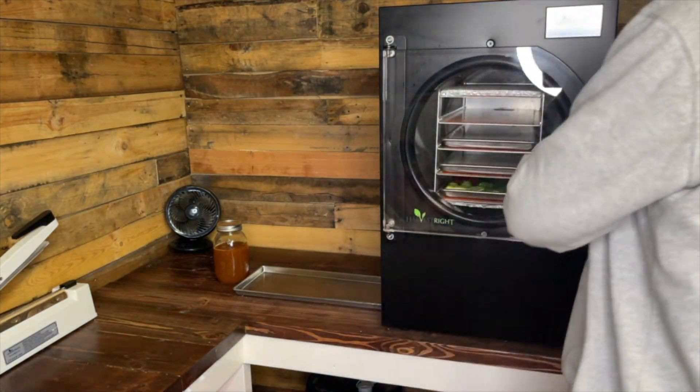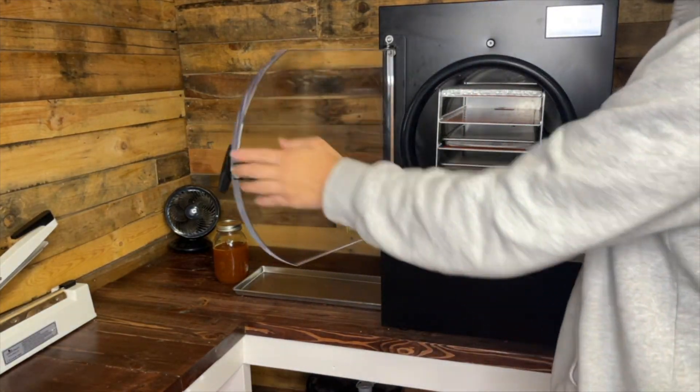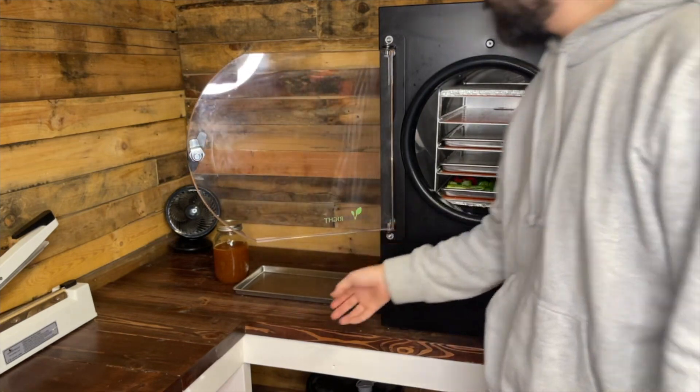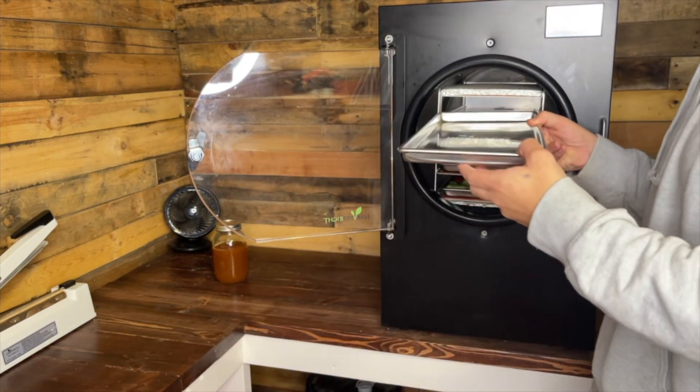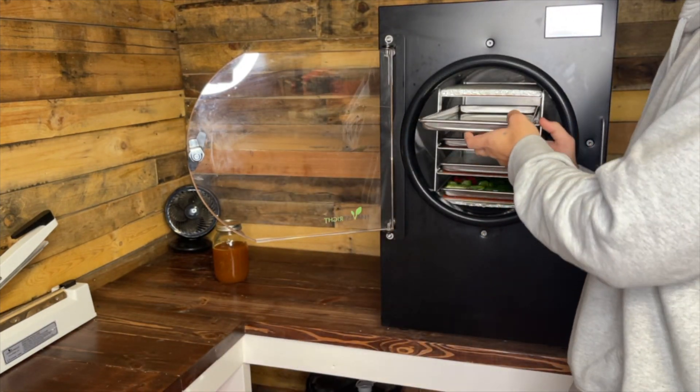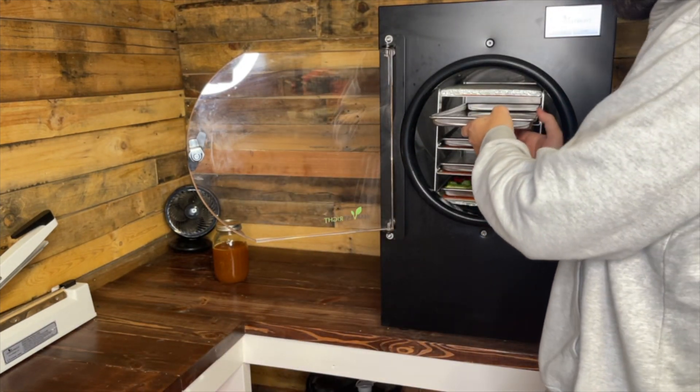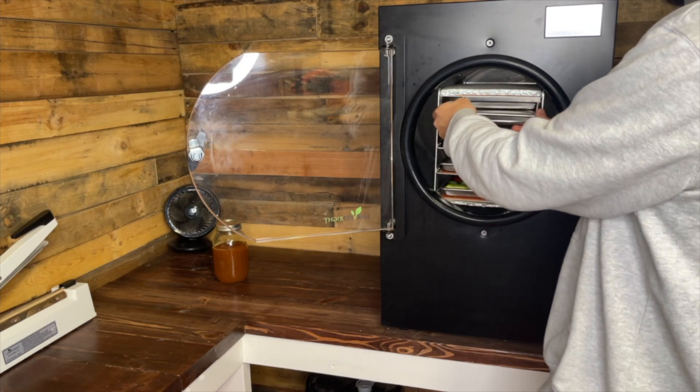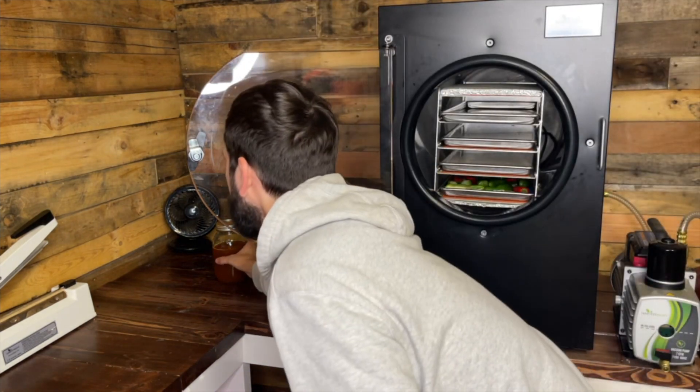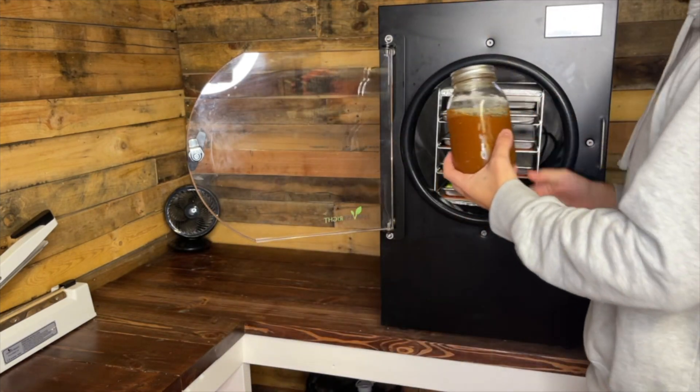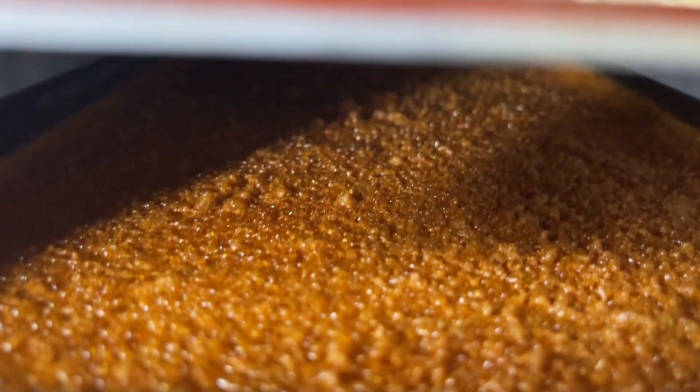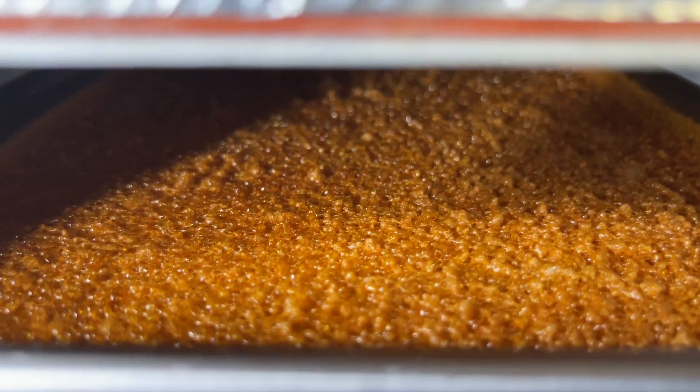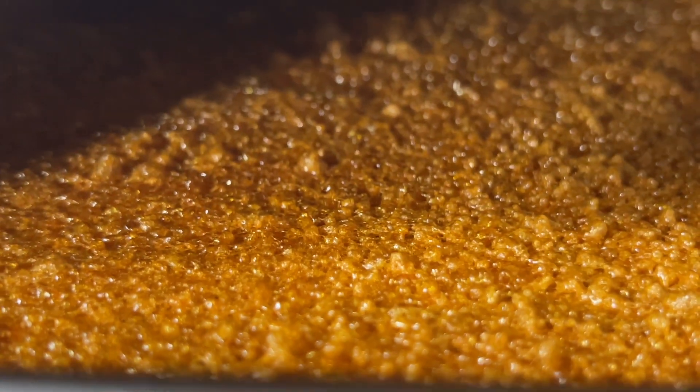Another one of my favorite machines to use is a Harvest Right freeze dryer. A freeze dryer is great for drying mushrooms at a low temperature to preserve the quality. I also found that it was perfect for turning mushroom extract liquid into a powder. If you're someone who has a weak stomach and can't drink medicinal mushroom tea, this is a great way that you can pulverize it and put it into capsules.